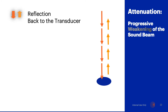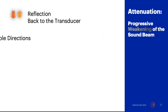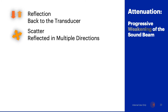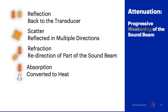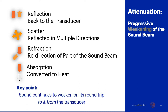The next form of attenuation is scatter, where the signal can be reflected in multiple directions and some of that scatter may not make it back to the transducer to be registered. The next is refraction, where there is a redirection of part of the sound beam. And the last is absorption, most of which is converted to heat — this forms the foundation for therapeutic ultrasound, which operates in a different frequency range than diagnostic work. Sound continues to weaken on its round trip to and from the transducer, so this is a progressive process as the sound travels into the patient and as it returns to the transducer.